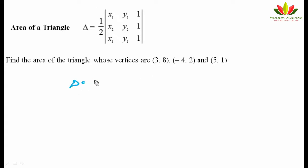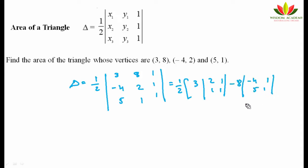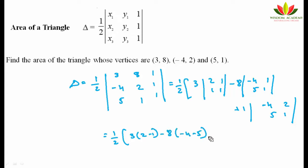So delta is equal to 1/2 times the determinant value. Here x1 is 3, x2 is -4, x3 is 5, and y1 is 8, y2 is 2, y3 is 1, with the last column all 1s. Expanding: 1/2 times [3(2·1 - 1·1) - 8(-4·1 - 5·1) + 1(-4·2 - 5·1)].